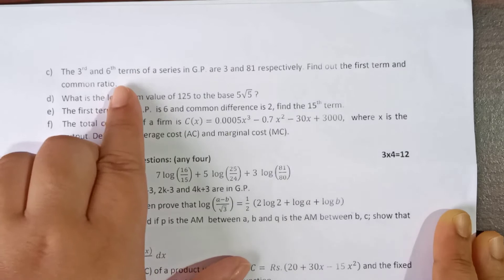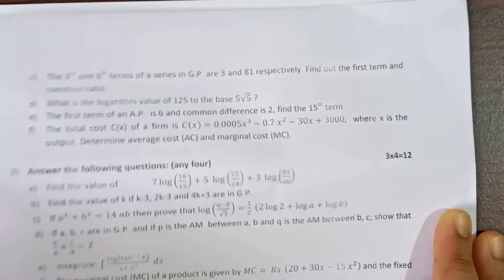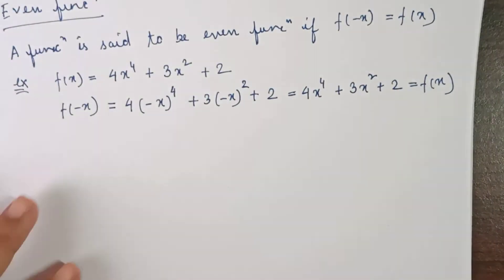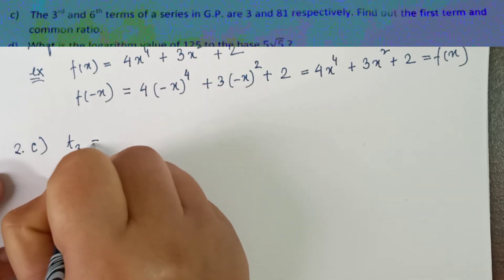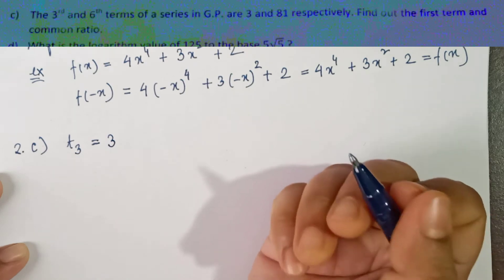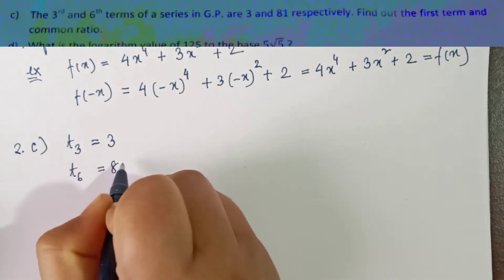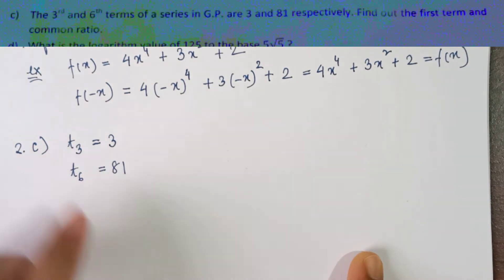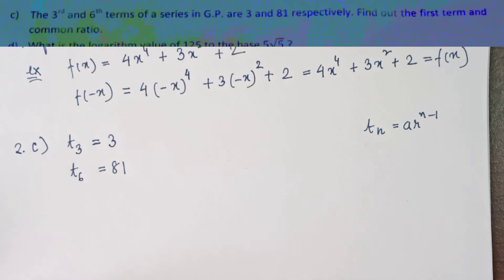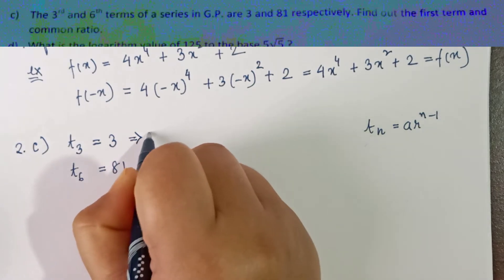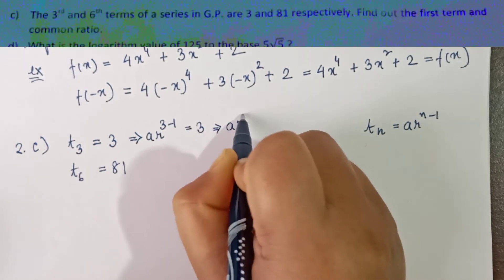The next question: the third and sixth terms of a series in GP are 3 and 81 respectively. Find out the first term and common ratio. Here, third term T₃ = 3 and sixth term T₆ = 81. In a GP series, the nth term is a·rⁿ⁻¹. So T₃ = a·r² = 3, which gives us equation 1.